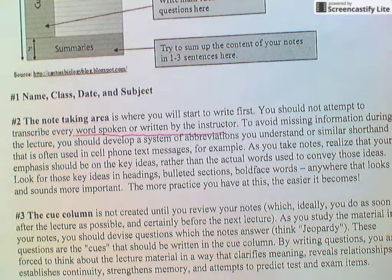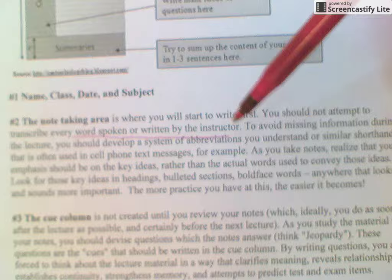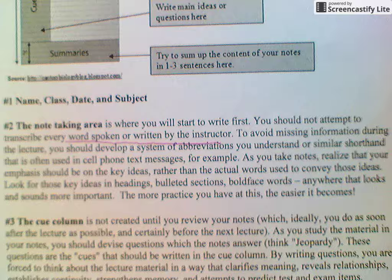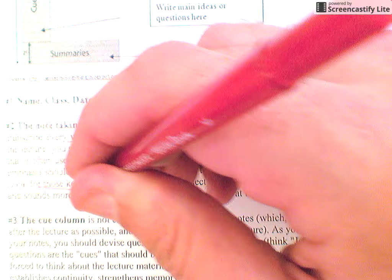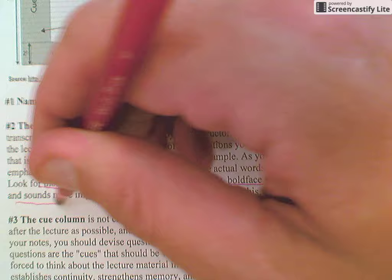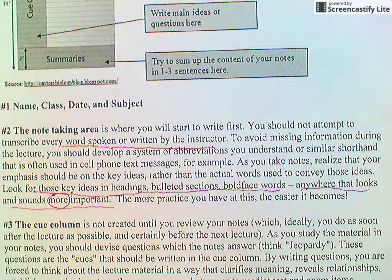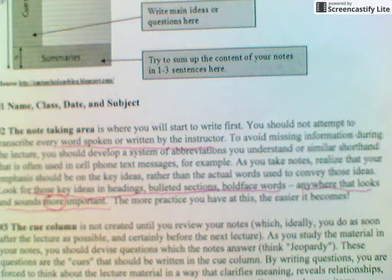You do not need to write down every word spoken by the instructor. Do not do this. If you just try to record everything word for word, you're not even thinking — you're just recording, and that's not the best way to take notes. What you want to do is look for key ideas and headings, bulleted sections, bold-faced words — anywhere that looks and sounds more important. You want to find the most important information.